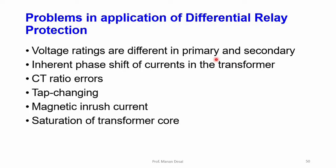In the case of a heavy external fault, the resulting uncalled-for tripping of the relay can be avoided by the use of a restraining coil in the differential relay. Using a percentage bias differential relay, this problem is almost resolved, as the pickup settings are different for internal faults and external faults.